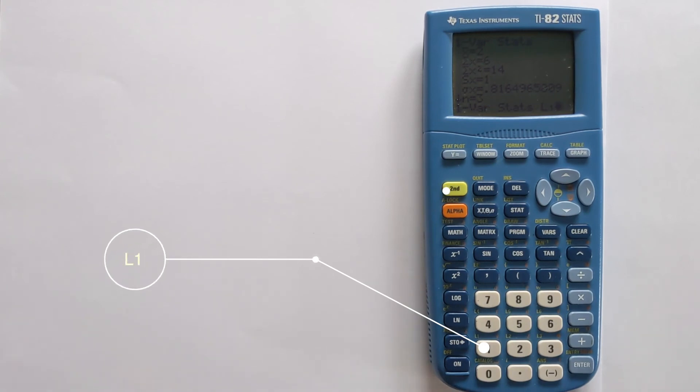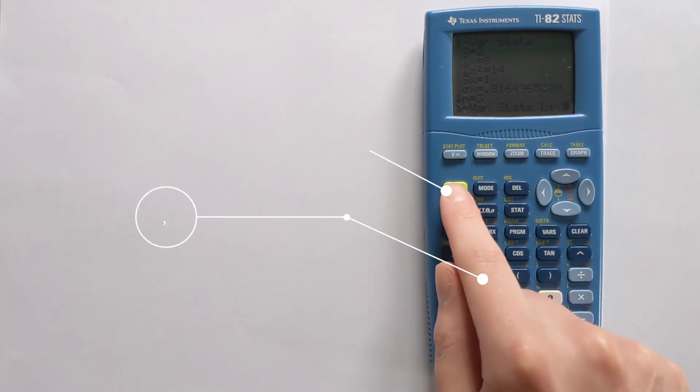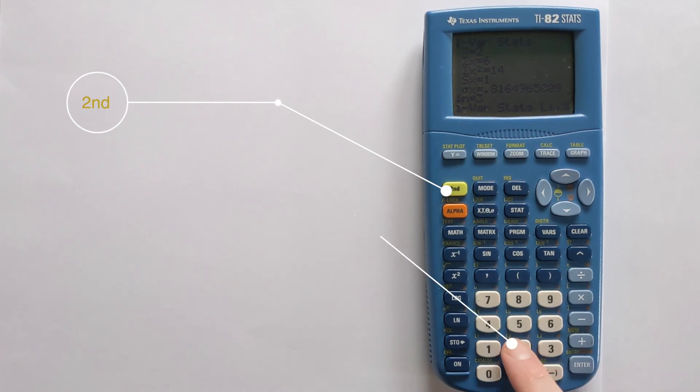Then we need a comma, so we put a comma here. Then second function L2. We're entering it like L1, L2. Then you press Enter, and it gives you the one variable statistics.